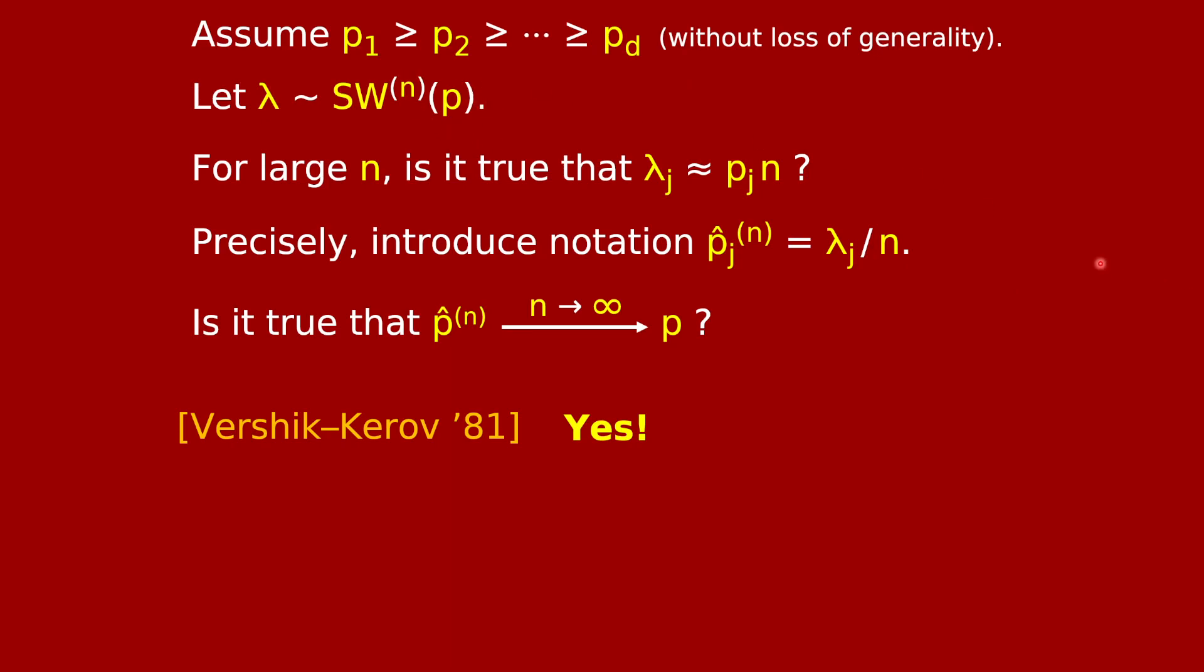Let's assume without loss of generality that the probabilities are ordered. P1 is the biggest and pd is the smallest. Let lambda be drawn from this distribution. Last time we saw examples suggesting that if the number of dice or the number of boxes n is very large, that lambda j seem to be in the neighborhood of pj times n. Therefore, if you set p hat j to be lambda j divided by n, this could give a good estimate for pj. Is it true that in the limit as n goes to infinity, this vector p hat tends to the vector of true probabilities p? Vershik and Kerov proved in 1981 that the answer is yes.